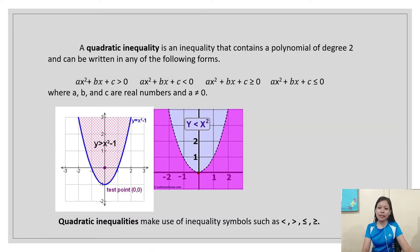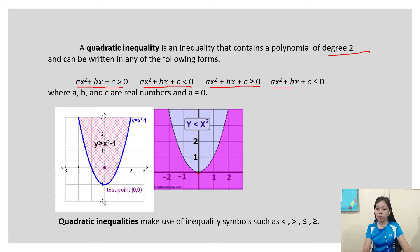A quadratic inequality is an inequality that contains a polynomial of degree 2 and can be written in any of the following forms: ax² + bx + c > 0, ax² + bx + c < 0, ax² + bx + c ≤ 0. Quadratic inequalities make use of inequality symbols such as less than, greater than, less than or equal, and greater than or equal.